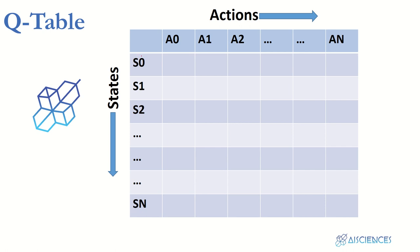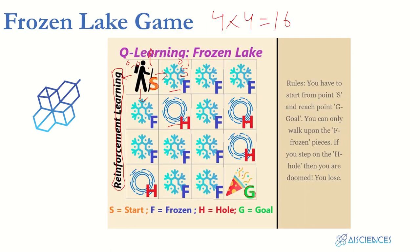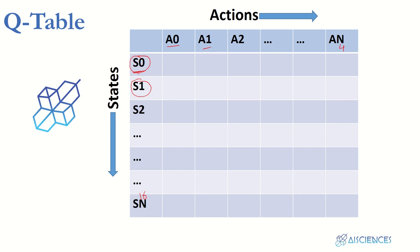On the Q-table we have number of states as rows — s0, s1, s2 up to sN, where N is 16 in our case. On columns we have actions a0, a1, a2 up to a4 — we have 4 actions. Our agent has to fill this table through experimentation. If our agent is at state s0, it has four actions to choose: action 0 is up, action 1 is down, action 2 is left, and action 3 is right.